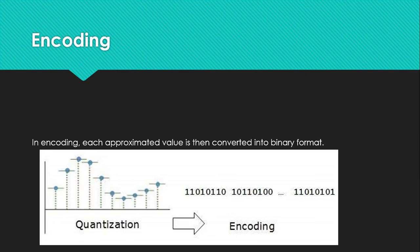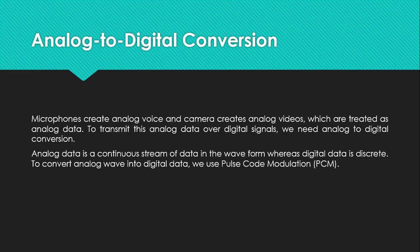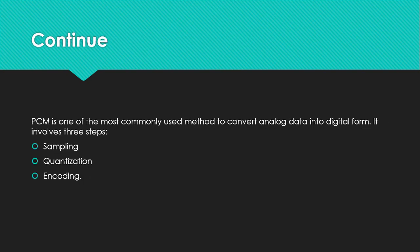Encoding: after sampling and quantization, encoding is the next important step. The process converts the quantized values into digital format. After encoding, the analog data is completely converted to digital information through PCM, which involves three processes: sampling, quantization, and encoding.